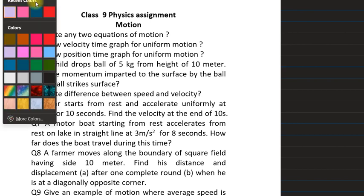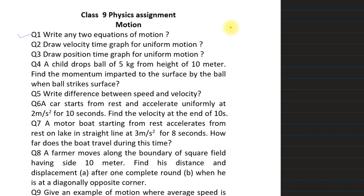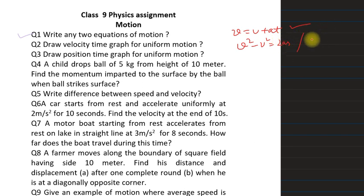For question 1, you have to write any two equations of motion for uniformly accelerated motion. One equation is v = u + at, another is v² - u² = 2s, and the third equation is s = ut + ½at². This is the answer for the first problem.